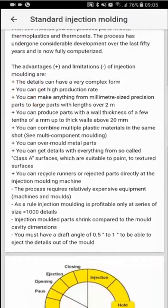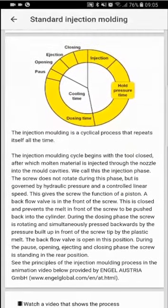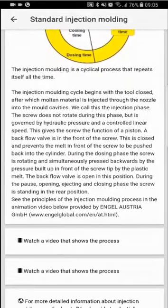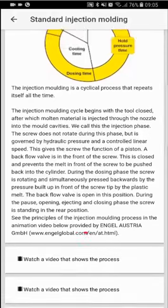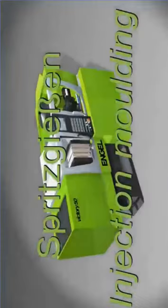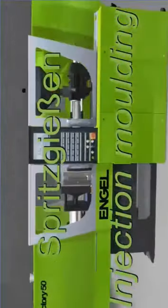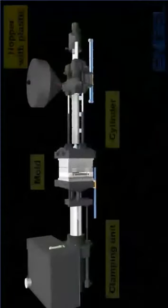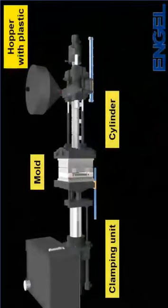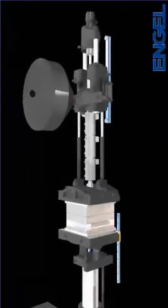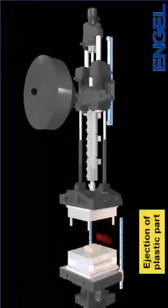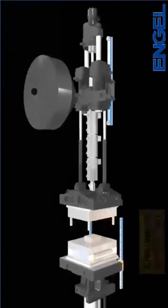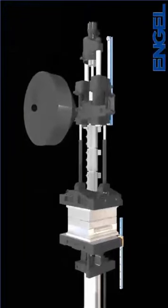You will see a description of the method with two images. At the end of the description, there are two videos. One video shows the principle of the process and one shows a real sequence of the cycle in a running molding machine. This is the one with the injection molding principle. In total, there are 30 videos in the app, and 23 of them belong to the processing part.